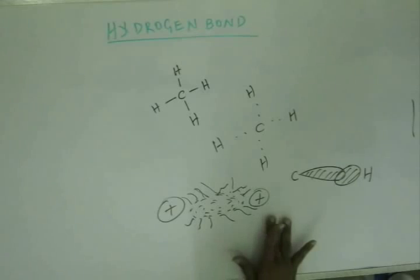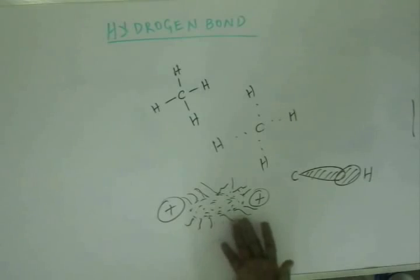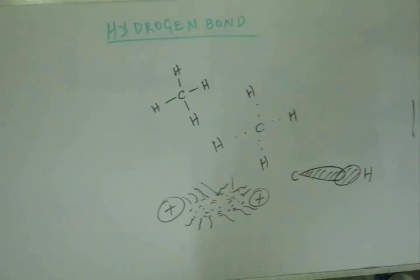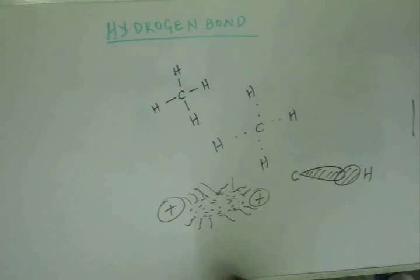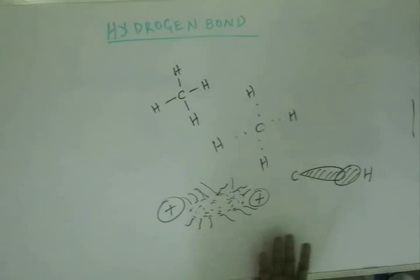Apart from the charge on the nucleus, the force of attraction will also depend upon the amount of electronic wave present between the atoms. The more the negative charge, the more it will be attracted by 2 positively charged nuclei, and hence stronger will be the bond. So if you have more electronic density here, the bond will be stronger. A bond is simply the attraction of an electronic wave by a positive center - that is, the nucleus. This is how we should visualize a bond.